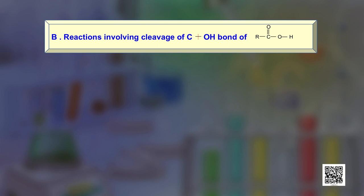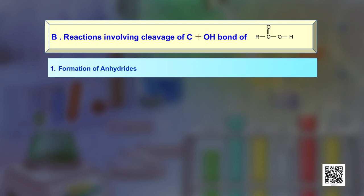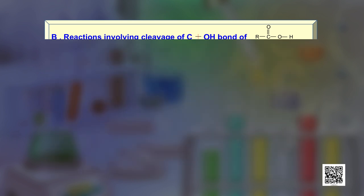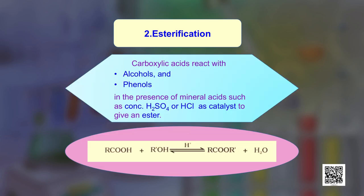The second category of reactions involves cleavage of the C-O bond of the carboxyl group. The first reaction is the formation of anhydrides: carboxylic acids on heating with mineral acids such as sulfuric acid or P₂O₅ give anhydrides, as shown. The second reaction is esterification: carboxylic acids react with alcohols and phenols in the presence of concentrated sulfuric acid or hydrochloric acid as catalysts to give an ester.